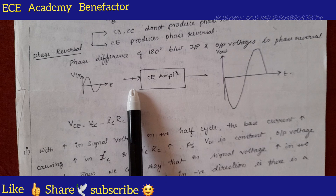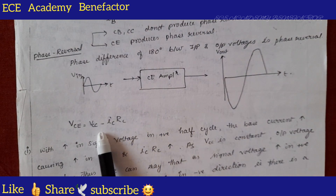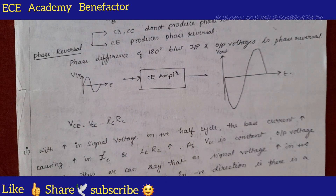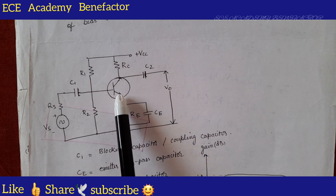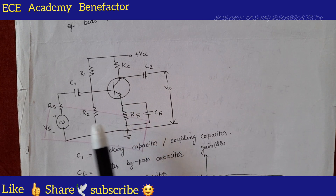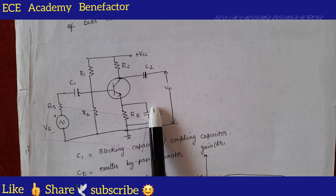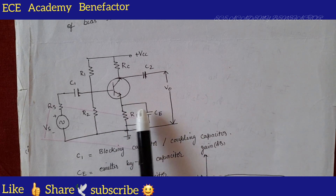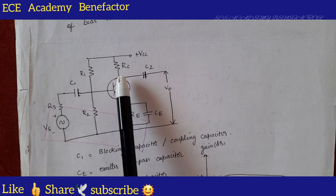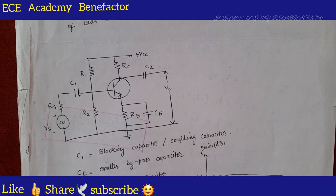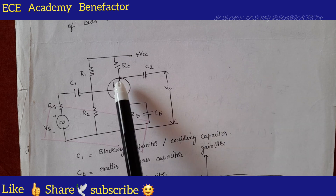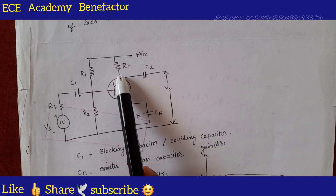You can prove this phase reversal based on the output equation of CE amplifier. This is the CE amplifier. Why is it known as CE amplifier? Because the emitter terminal is common to both the input side and output side — the emitter terminal is common. Another way of saying this is it is a common emitter amplifier when we observe the output at the collector terminal of the transistor. What is the output equation of a CE amplifier? Where are we observing the output voltage? At the collector.